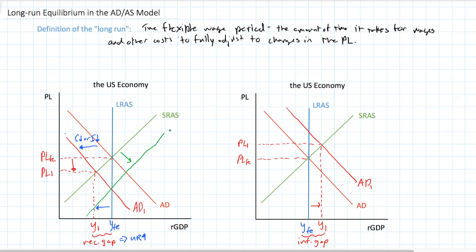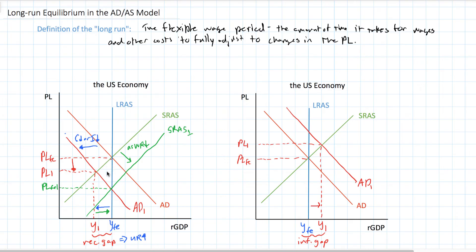Wages and other resource costs are the major determinant of the level of aggregate supply. So as the wage rate falls, aggregate supply increases — firms once again wish to hire more workers. Despite the fact that demand for their products is lower and prices have fallen, lower wages make it more attractive to produce output. Output begins to recover and return to the full employment level, giving us a new full employment price level — PL Full Employment 1 — and we return to our original full employment level of national output. In this way, the economy self-corrects from a demand-deficient recession.